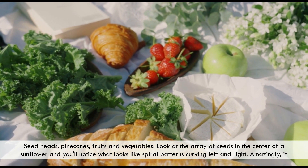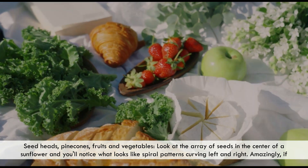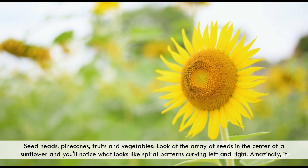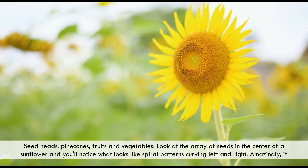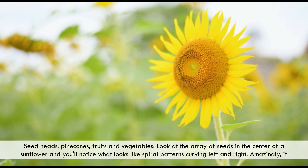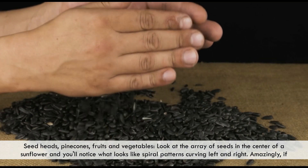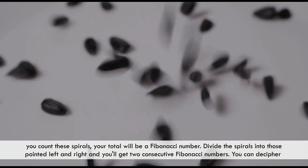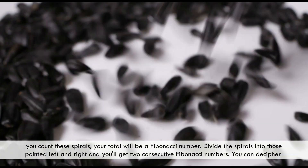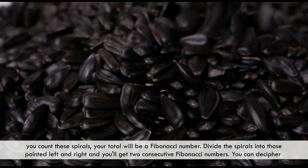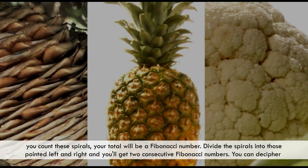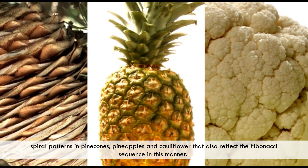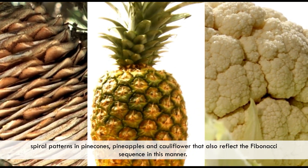Fibonacci numbers appear in nature often enough to prove that they reflect naturally occurring patterns, commonly spotted by studying how various plants grow. Seed heads, pine cones, fruits and vegetables: look at the array of seeds in the center of a sunflower and you will notice spiral patterns curving left and right. If you count these spirals, your total will be a Fibonacci number. Divide the spirals into those pointed left and right and you get two consecutive Fibonacci numbers. Similar spiral patterns in pine cones, pineapples, and cauliflower also reflect the Fibonacci sequence.